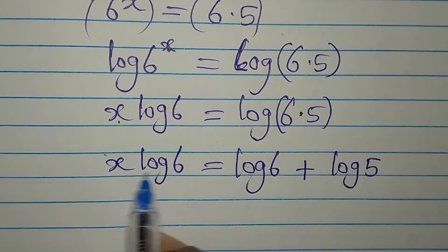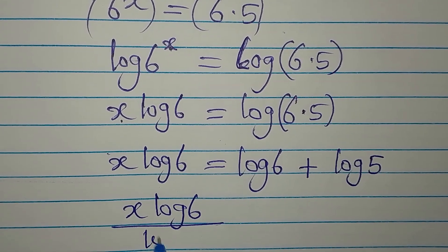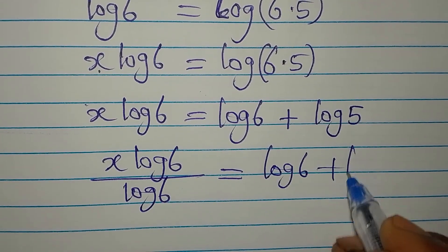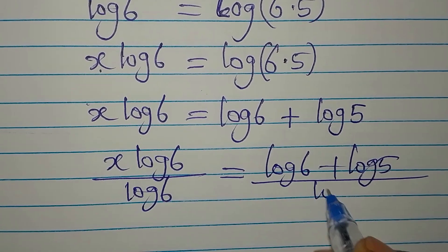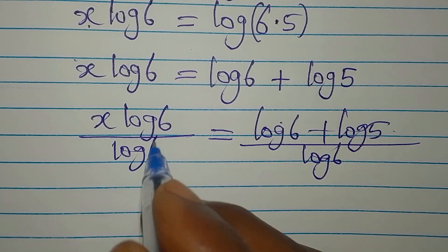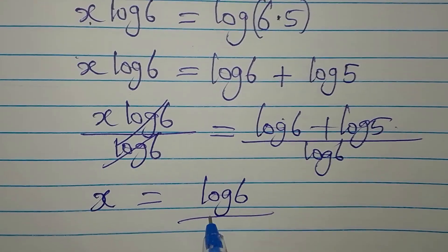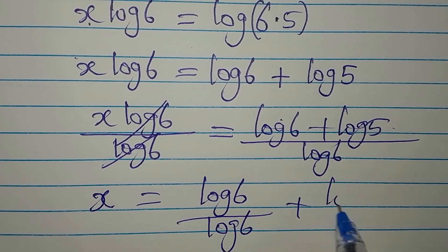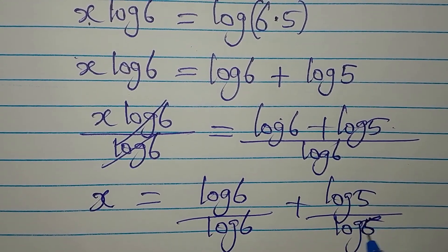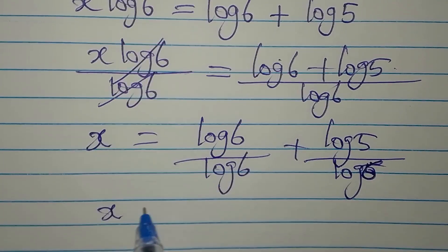Now, how do we remove log 6 from the left side? We divide both sides by log 6. The whole of log 6 plus log 5 is divided by log 6, giving us: x = log 6 over log 6 plus log 5 over log 6.